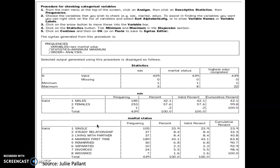So this is a procedure for checking categorical variable according to Julie Pellan. So from the main menu at the top of the screen, click on Analyze, then click on Descriptive Statistic, then Frequency. So how to do or how to get descriptive statistics, I've told you earlier in our lecture before. So choose the variable that you wish to check. For example, sex or gender, marital, education, so on and so forth. To assist in finding the variable you want, you can right-click on the list of variables and select Sort Alphabetically. So you can sort from A to Z. Or to show variable names or variable label. So click on the arrow button to move this into the variable box, the variable that you wish to check. And then click on the Statistic button. Tick Minimum, Maximum in the Dispersion section. Click on Continue and then OK. Or you can go on Paste to Save to Syntax Editor.